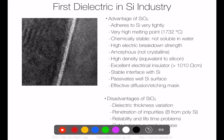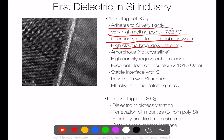The first dielectric used in the silicon industry is silicon oxide, because silicon oxide naturally forms on silicon surfaces. Fortunately, the quality of silicon oxide is very good — very strong adhesion to silicon, very high melting point, thermally and chemically stable, high electrical breakdown, non-crystallized (which is important to block leakage current), high density, and high electrical insulation, with a stable interface with silicon.